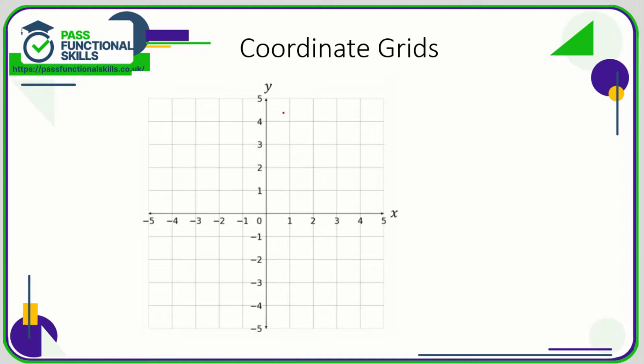Let's take a look at coordinate grids. So here is a coordinate grid and we have two lines, an x line and a y line. Now these lines are called axes. So this line here is the x-axis, and this line here is the y-axis.